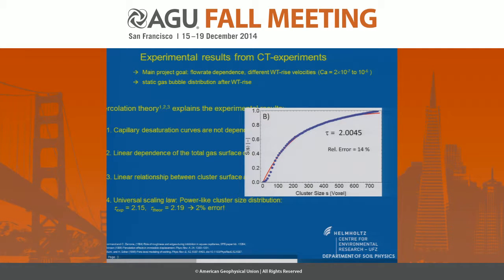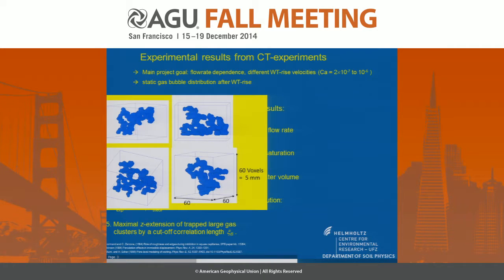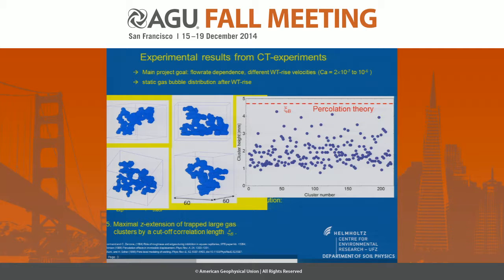Regarding cluster size distribution, in all cases and on all rocks we studied, we found a universal power-law behavior. Looking at these large clusters, percolation theory gives a nice threshold, and all our investigated clusters never exceed this threshold from percolation theory.